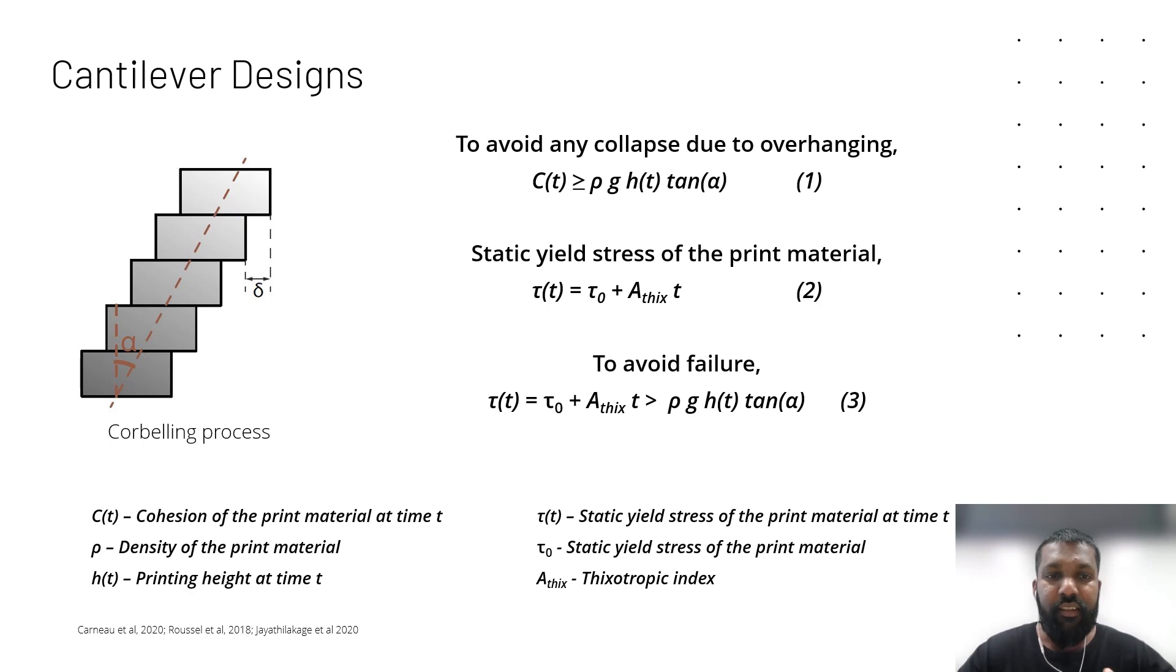Also, you can see tan 90 degrees approaches infinity, so at some overhanging, the failure is definite. There's a physical maximum which is put by the overhanging design, and we need to find a material limitation to fit this physical maximum.